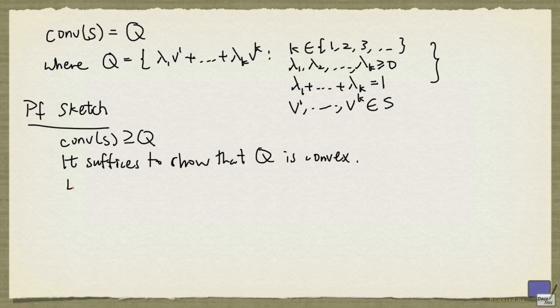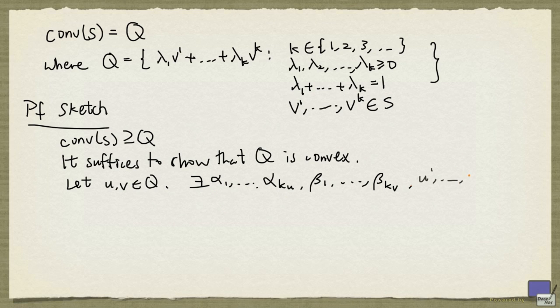To show that Q is convex, let U and V be from Q. By the definition of Q, there exists α1 up to αku, β1 up to βkv, u1 up to uku in S,